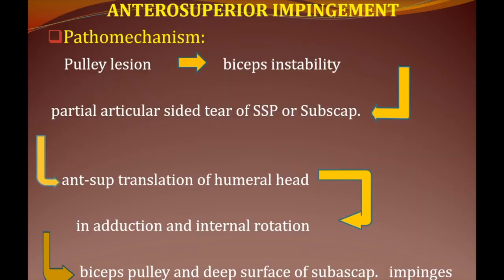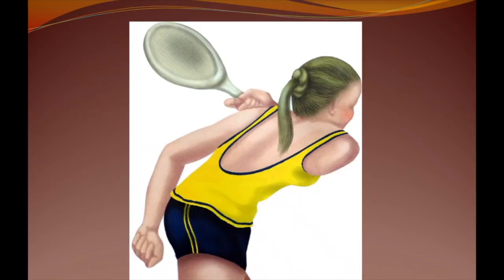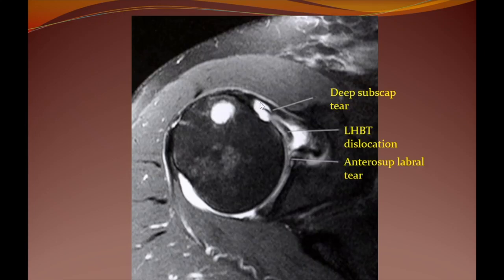Very briefly, anterosuperior impingement is a condition where a pulley lesion leads to biceps instability. The deep surface of the subscapularis tendon along with the pulley lesion will impinge against the anterosuperior glenoid ring in a position of horizontal adduction and internal rotation of the arm, causing anterosuperior labral tear.